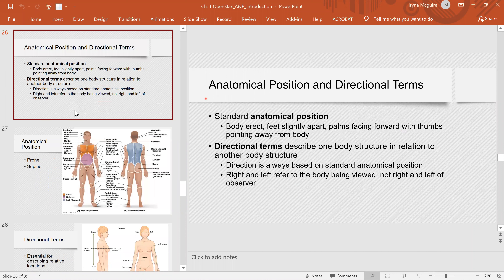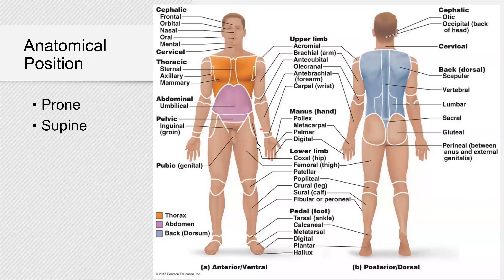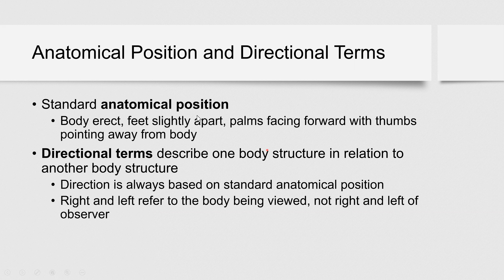So, standard anatomical position: body erect, feet slightly apart, palms facing forward with thumbs pointing away from the body. If you look at the next slide, this guy here is in anatomical position — erect, palms facing forward, feet slightly apart, and thumb pointing away from the body. Anatomical position is your point of reference. Whenever you describe your patient — maybe some injury, some landmarks, position of body parts — you're always referring to anatomical position.